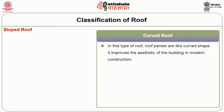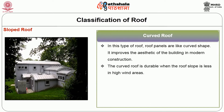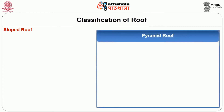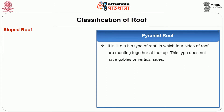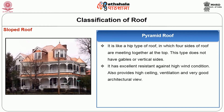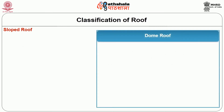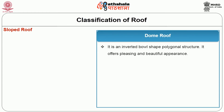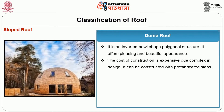The curved roof has roof panels in a curved shape, improving the aesthetic of the building in modern construction. The curved roof is durable when the roof slope is less in high wind areas. The pyramid roof is like a hip-type roof in which all four sides of the roof meet together at the top. This type does not have gables or vertical sides. It has excellent resistance against high wind conditions and also provides high ceiling, ventilation and a very good architectural view. The dome roof is an inverted bowl-shaped polygonal structure that offers a pleasing and beautiful appearance. The cost of construction is expensive due to its complex design, but it can be constructed with prefabricated slabs.